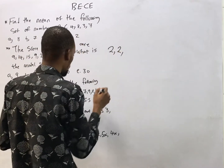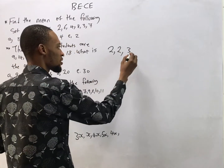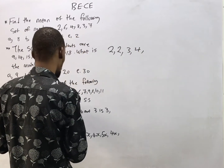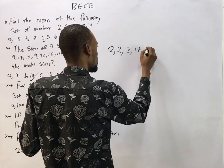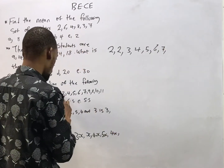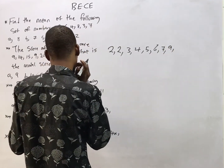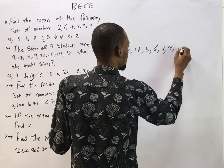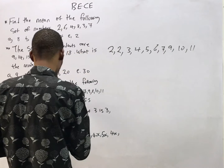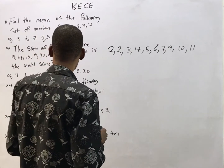Continuing in ascending order: 3 appeared once, then 4, then 5 appeared once, 6 once, 7, then no 8, so we have 9, then 10, then 11. Counting: one, two, three, four, five, six, seven, eight, nine, ten — and confirming again: one through ten. So there are ten numbers total. Now what is the middle number?